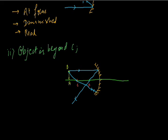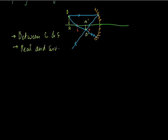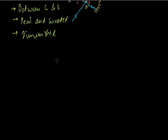The image is formed between C and F. It is real and inverted. My object is at A and B, just above the principal axis. The image is diminished.